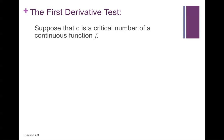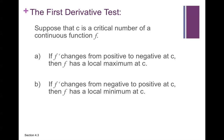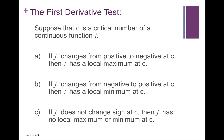The First Derivative Test. Suppose that c is a critical number of a continuous function f. If f prime changes from positive to negative at c, then f has a local maximum at c. If it changes from negative to positive, then it has a local minimum. If it does not change sign, then f does not have a local max or min at c.